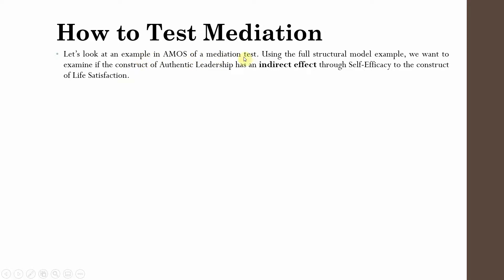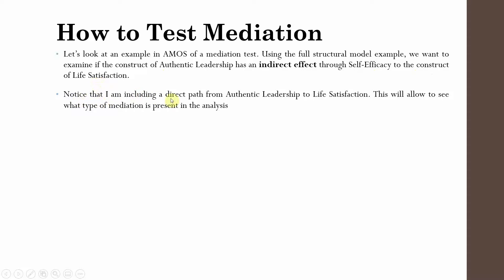Let's look at an example in AMOS of a mediation test. Using the full structural model example, we want to examine if the construct of authentic leadership has an indirect effect through self-efficacy to the construct of life satisfaction. Your mediator is self-efficacy, your IV is authentic leadership, and your DV is life satisfaction. Note that we are including a direct path from authentic leadership to life satisfaction to see what type of mediation is present.